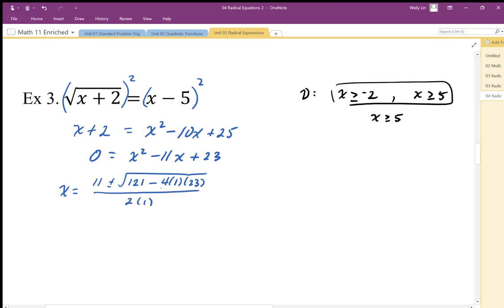So this ends up being, that's going to be 121 minus 92. So we end up with 11 plus minus square root of 121 minus 92 gives me 29, all over 2.